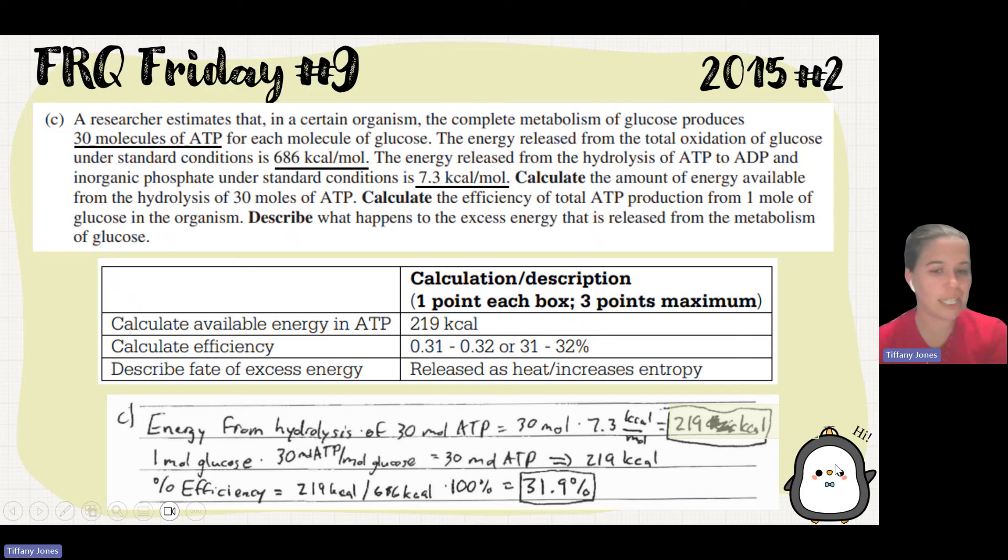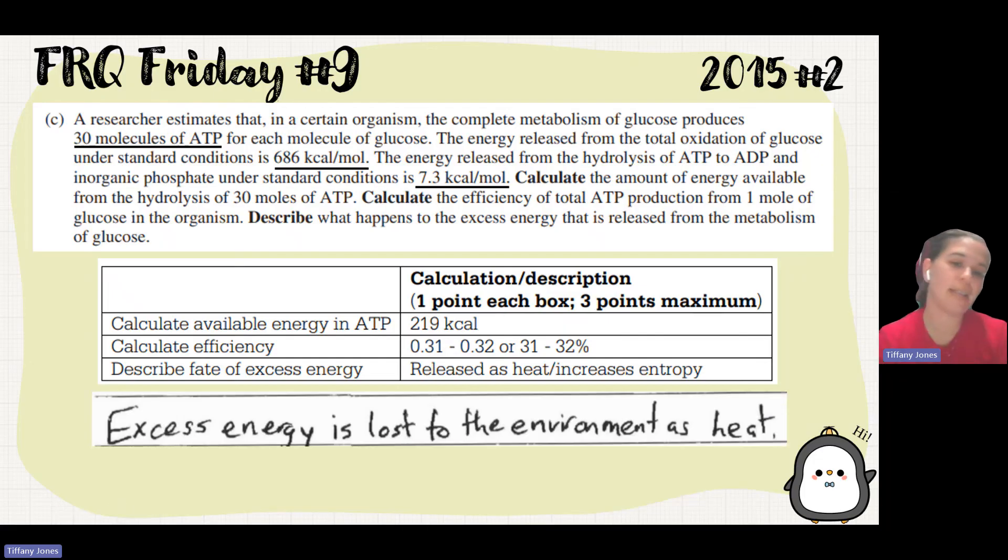And then we want to see the efficiency. So 219 divided by 686 gave us 31.9 percent. They did not tell you what number to write it to. So the student did great by putting it to one decimal place. And then they describe what happens. Energy is lost to the environment as heat.